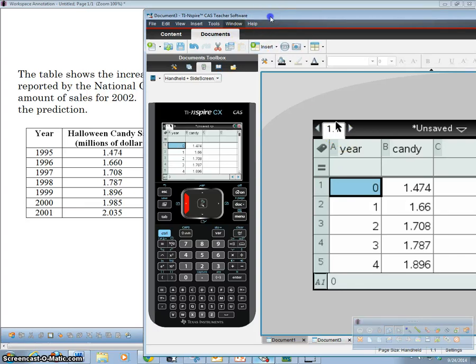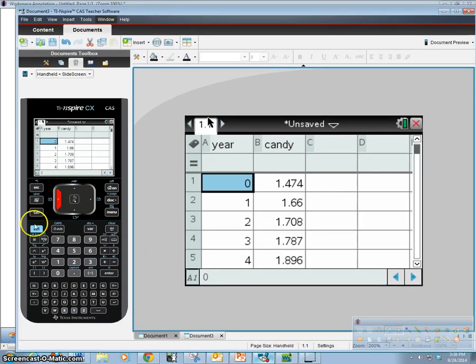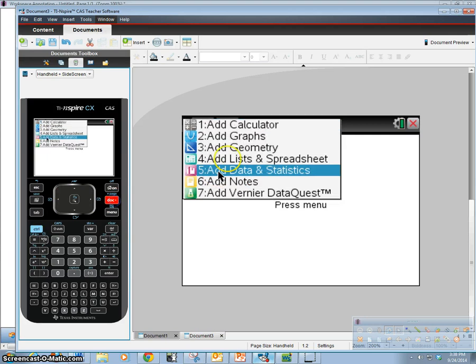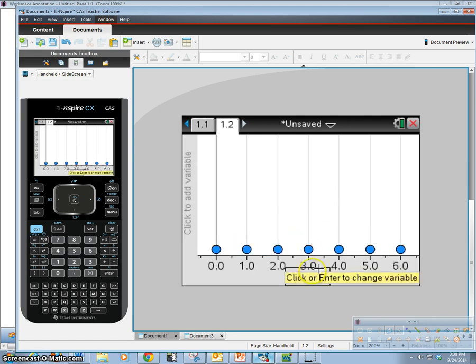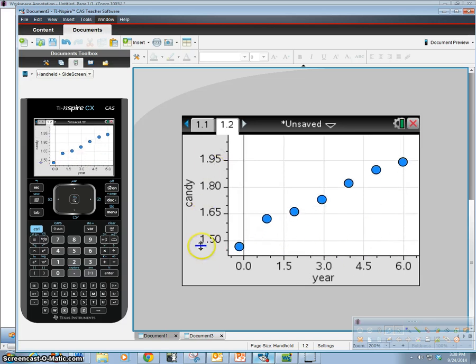All right. So after we enter in our data, we're going to create a data and statistics page. And then down here, we're going to go ahead and click and enter in our year. And usually time is going to be our explanatory variable. We're going to click and add candy. And this is our response variable. And we've got our scatter plot.